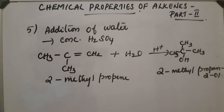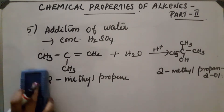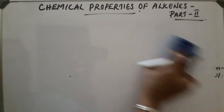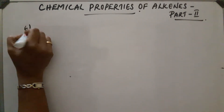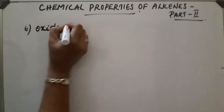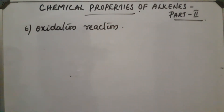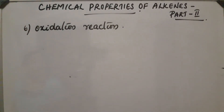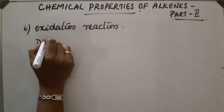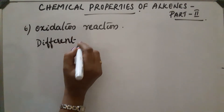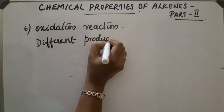The next chemical property, the sixth property, is oxidation reactions. Alkenes contain a double bond, and due to the presence of this double bond they get easily oxidized as compared to alkanes. Different products are obtained depending on the oxidizing agent used.